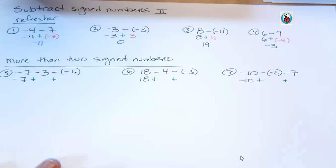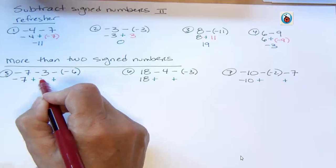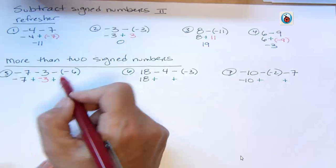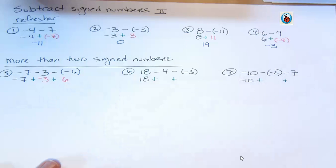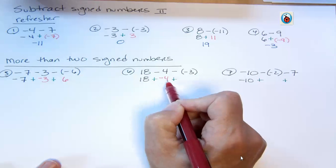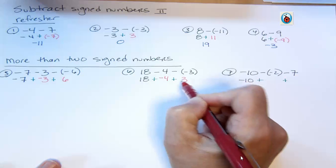Now I'm going to go back and change the sign of everything that followed those. So here, this was a three. I'm going to write that as negative three. This was a negative six. That's going to be six. Over here, this was four. I'm going to write that as negative four. Here, this was negative three. That's going to be positive three.